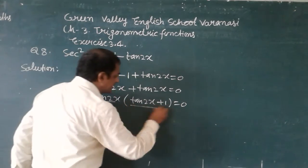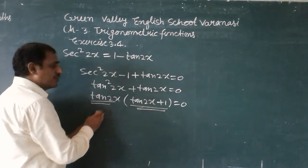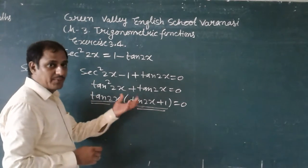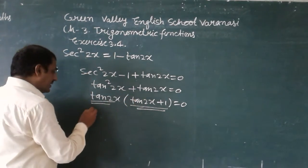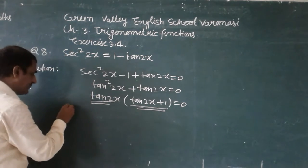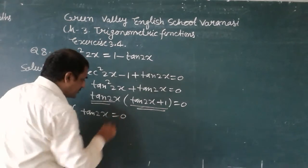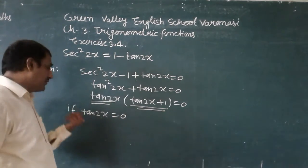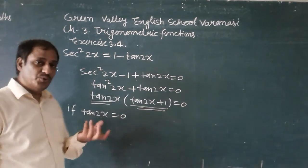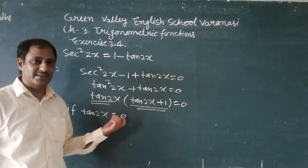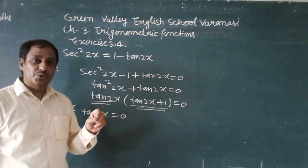So, what will be the value of x? If this will be 0, then what will be the value of x? Either this will be equal to 0, if tan2x is equal to 0, then what will be the value of x? The value of tan function at 0...